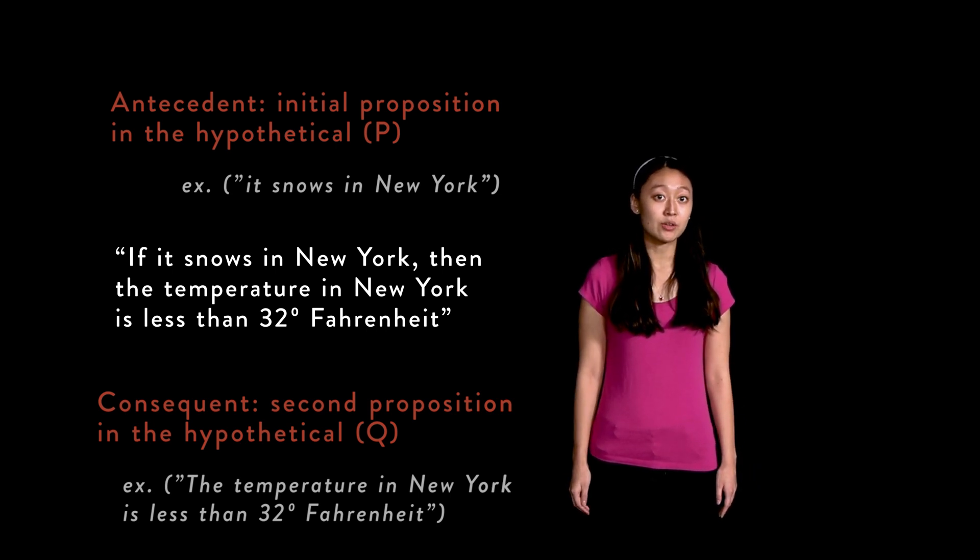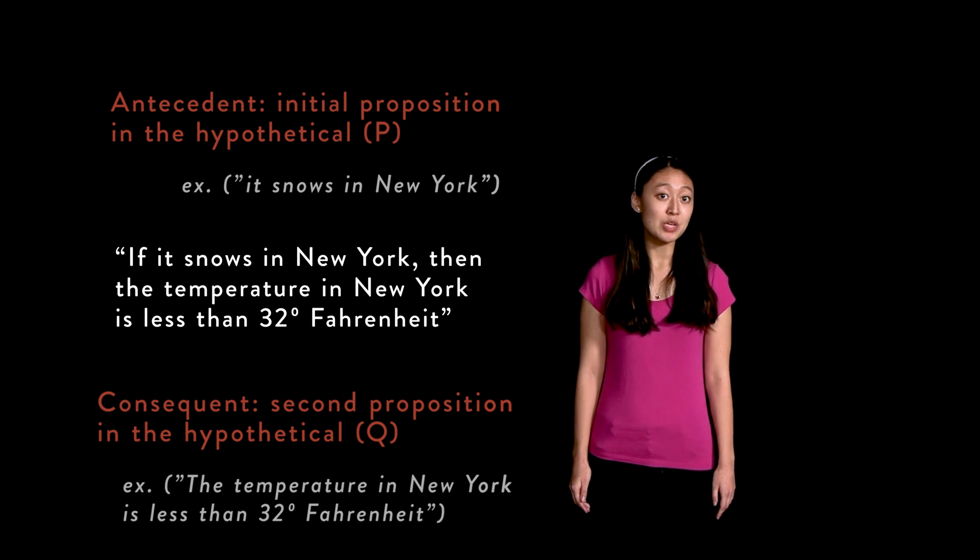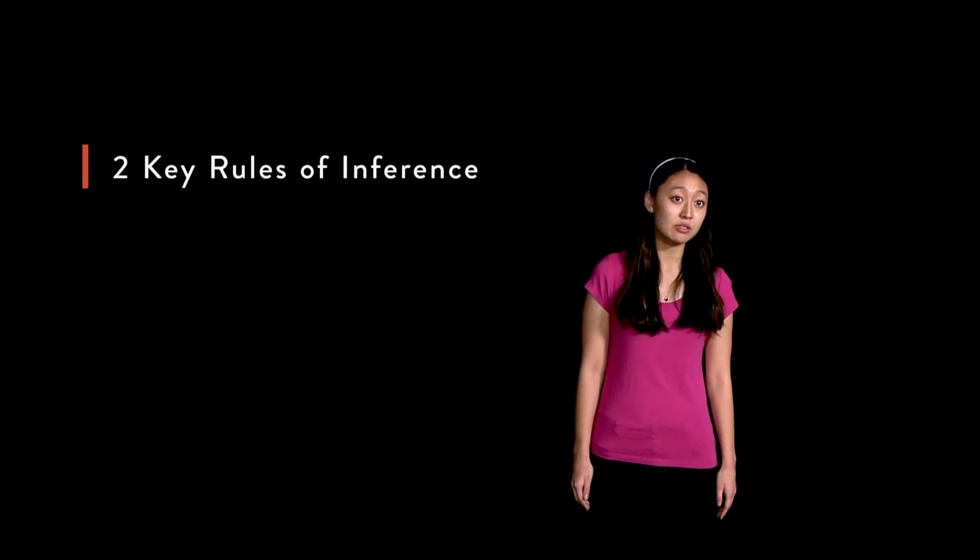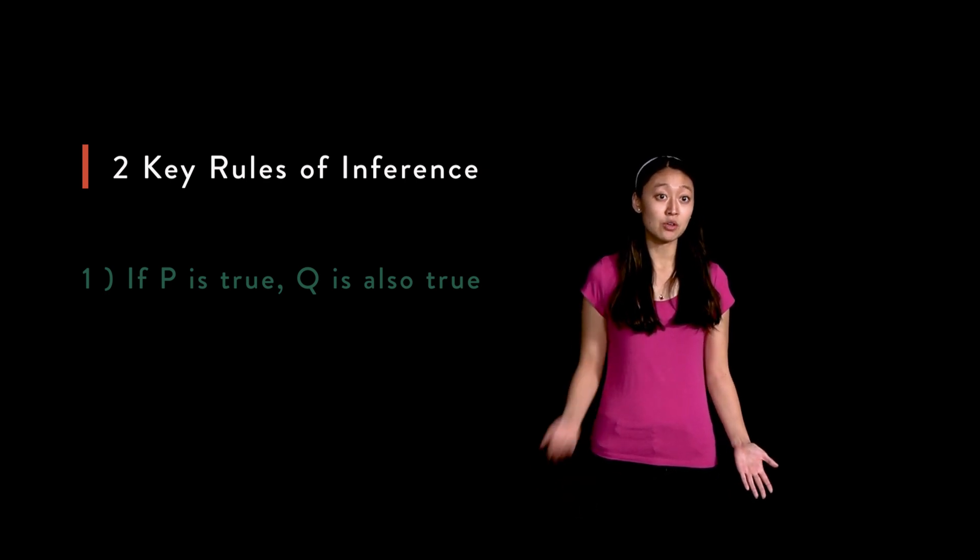Our knowledge of the hypothetical informs us that the truth of p implies the truth of q. From here we can derive two key rules of inference. First, if p is true, then q is true as well, due to the fact that the hypothetical links the truth of p to that of q.